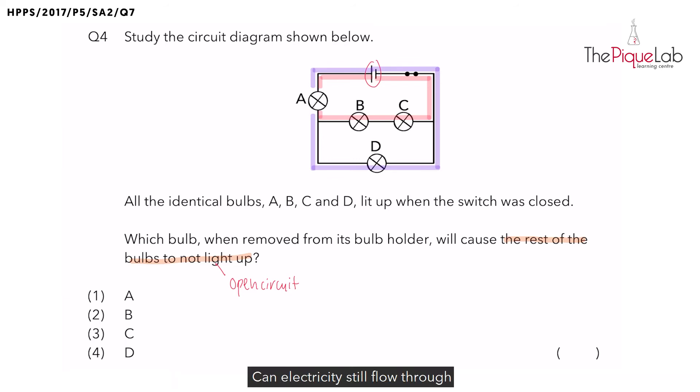Can electricity still flow through the other bulbs in the circuit? No. Will the other bulbs light up? No. Hence, choosing bulb A will cause the rest of the bulbs not to light up, giving us the answer as option number one.